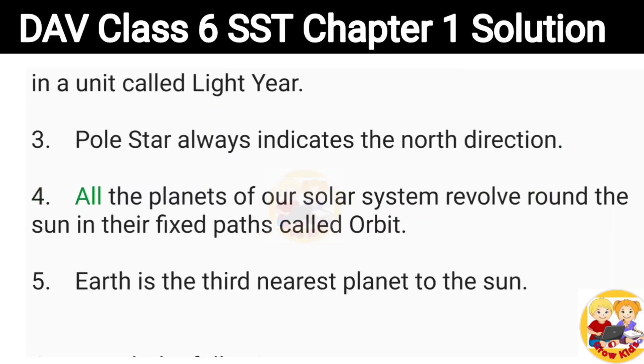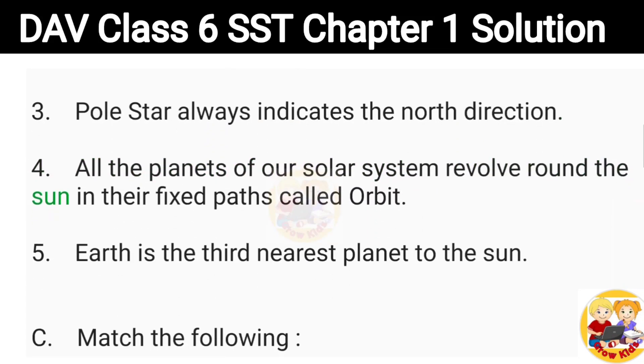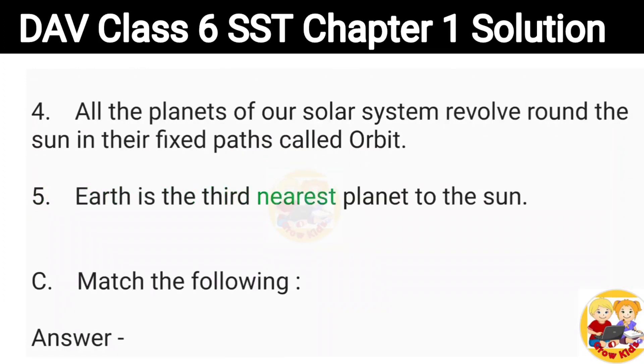4. All the planets of our solar system revolve round the Sun in their fixed paths called orbit. 5. Earth is the third nearest planet to the Sun.